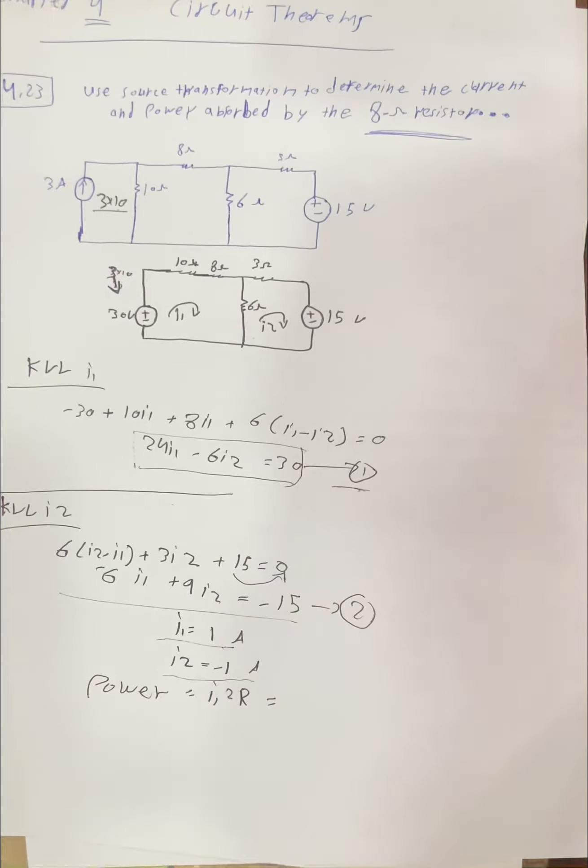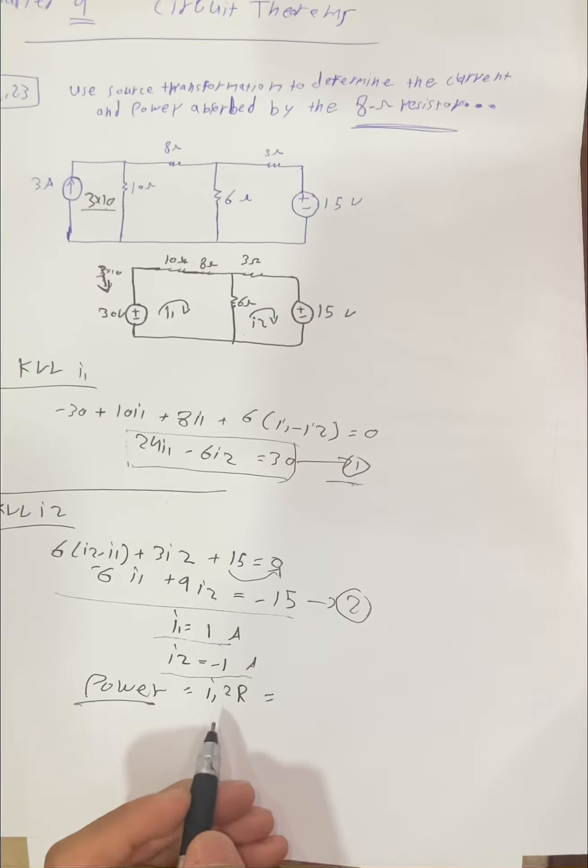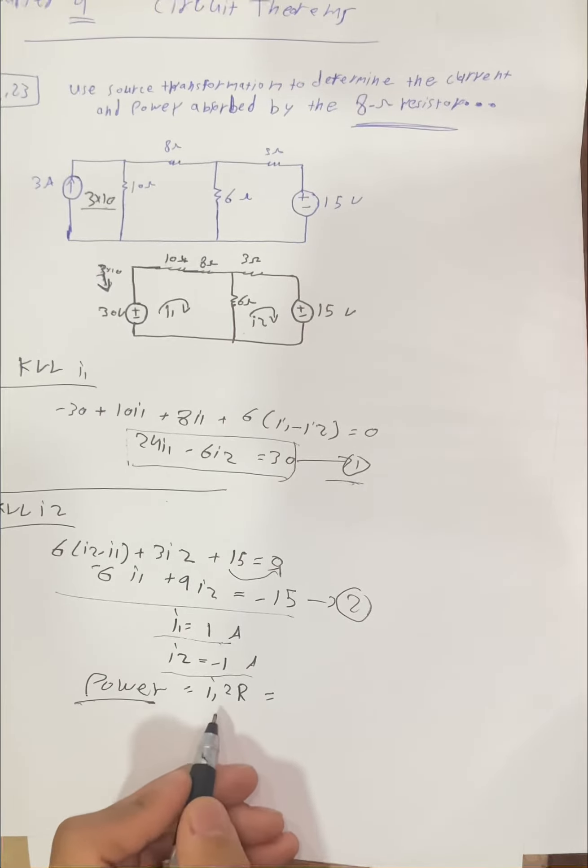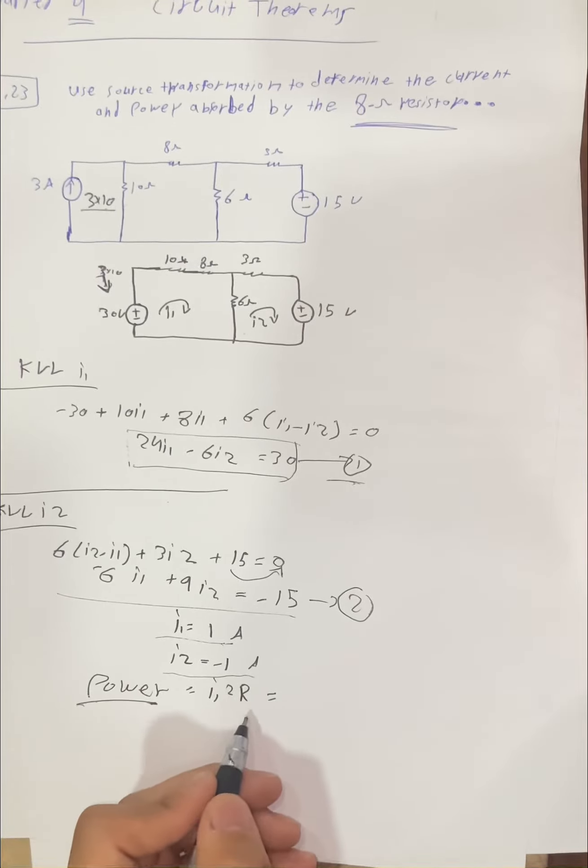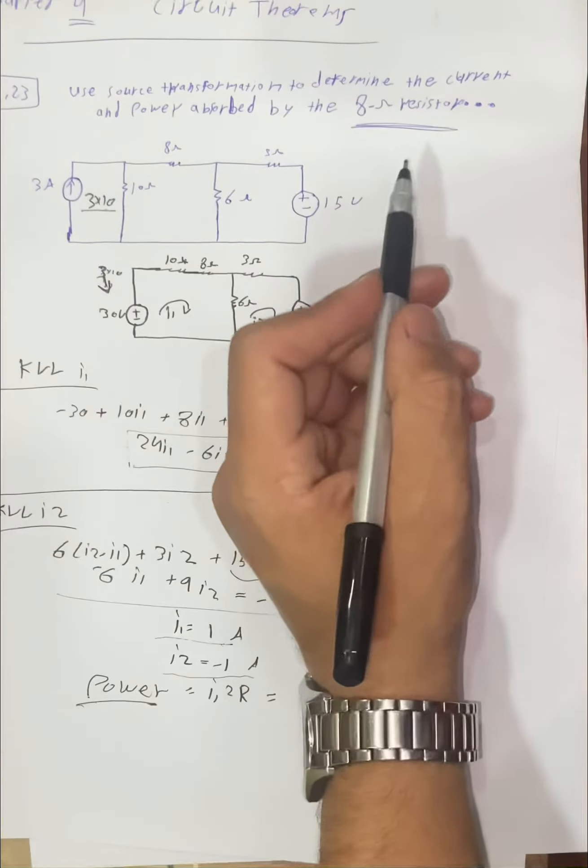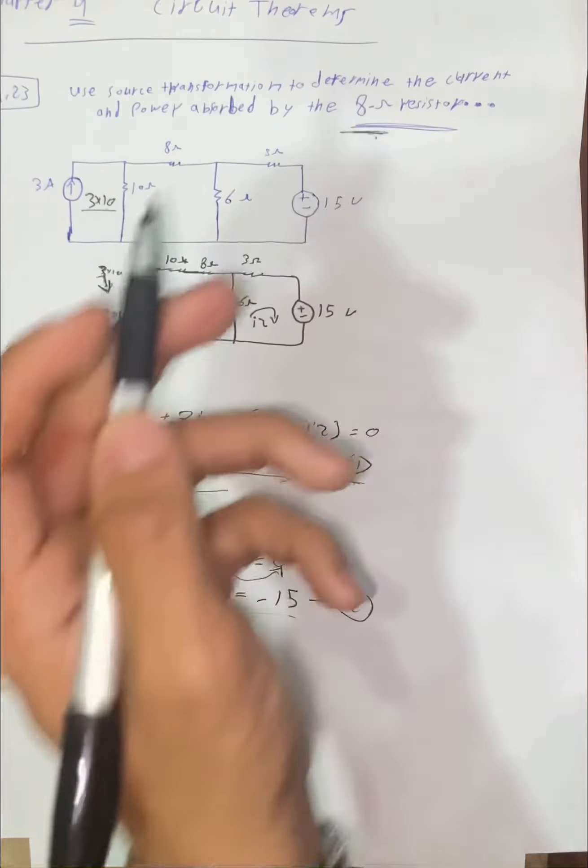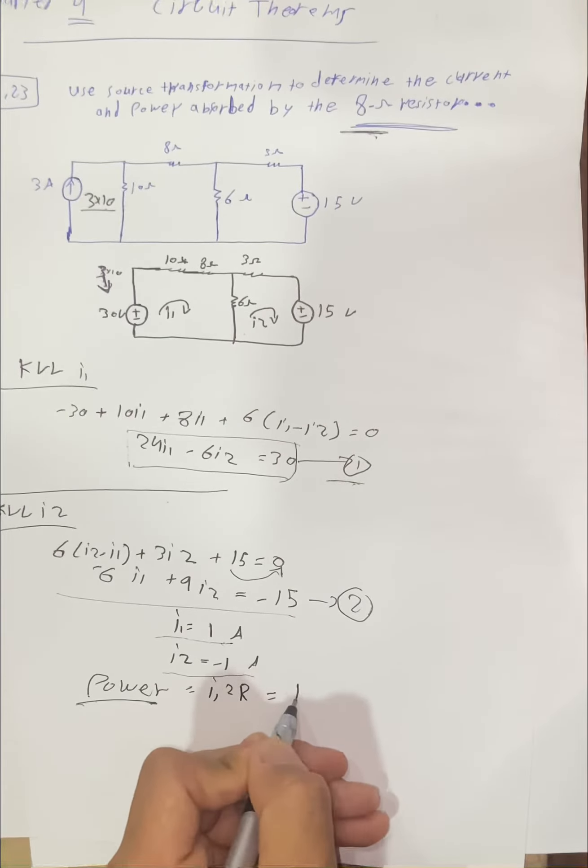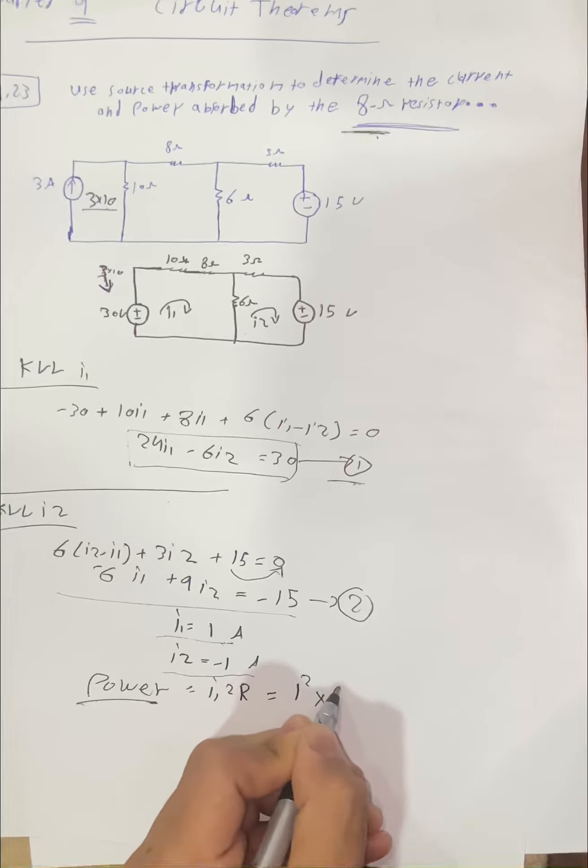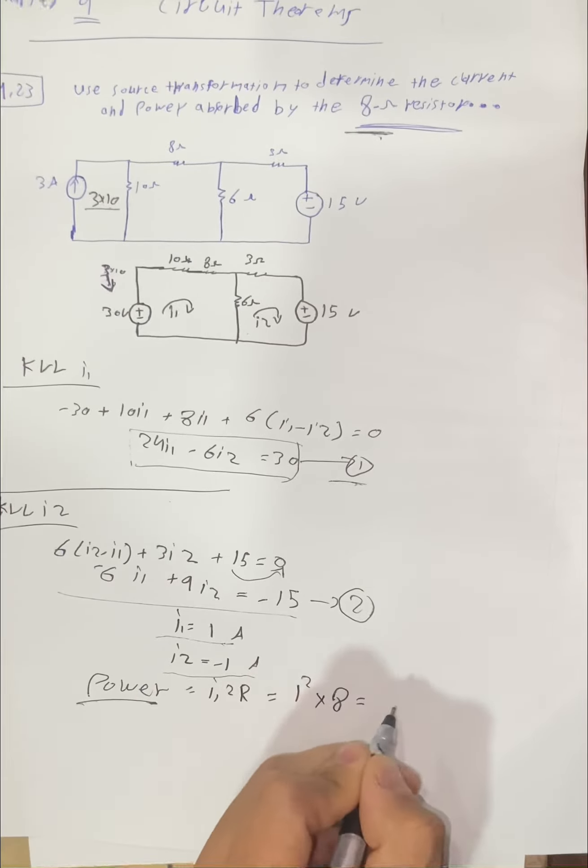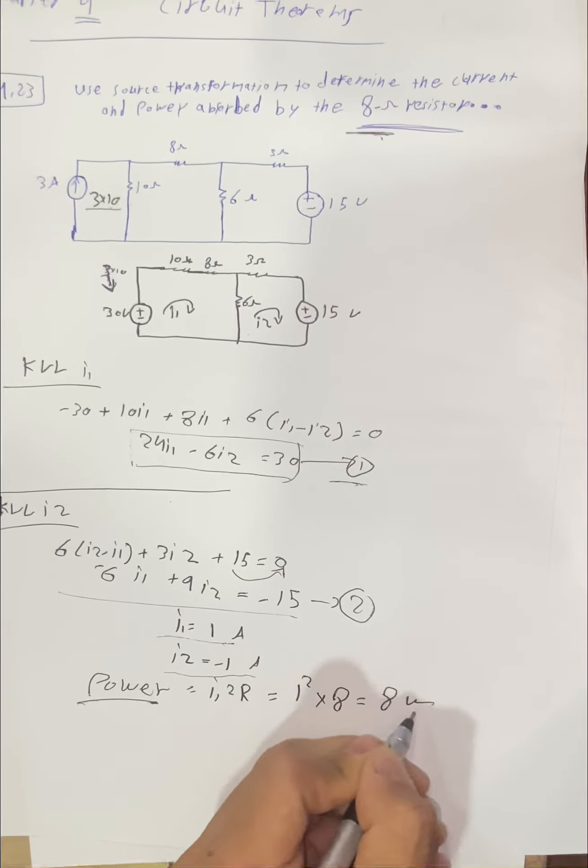We find the power. The power is I1 squared multiplied by R, that is the R resistor. Now 1 squared multiplied by 8 equals 8 watts.